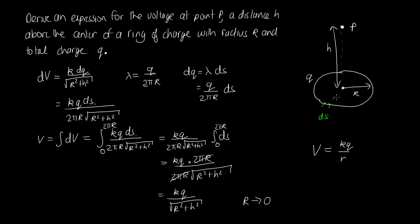As the ring gets really, really small, it should start to look like a point charge. So if we substitute R equals 0 in here, then we've got that the voltage is going to go to kq over the square root of h², which is kq over h.